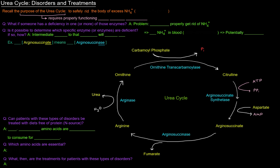So if you recall, the purpose of the urea cycle was to safely rid the body of excess ammonium ion because it is toxic. The urea cycle requires properly functioning urea cycle enzymes because those enzymes are what actually allow the processing of that excess ammonium ion. What if someone has a deficiency in one or more of those enzymes? Well, that means that person cannot properly get rid of ammonium ion, and there would be an increase in the concentration of NH4+ in the blood, which is called hyperammonemia, which is really, really bad and dangerous, and it's potentially lethal.